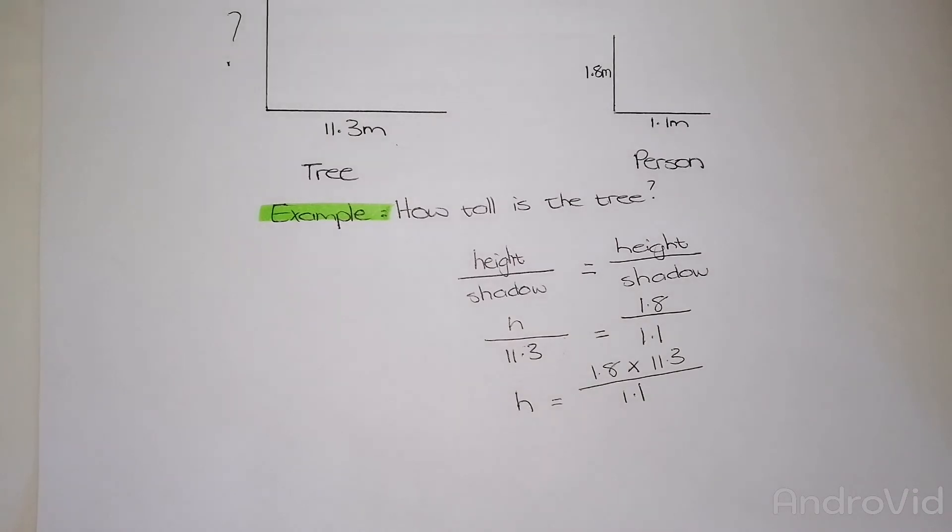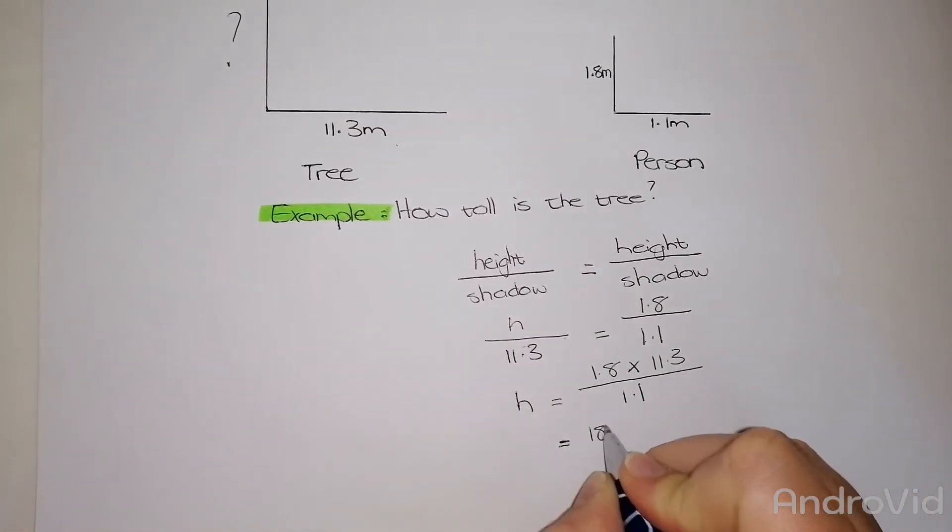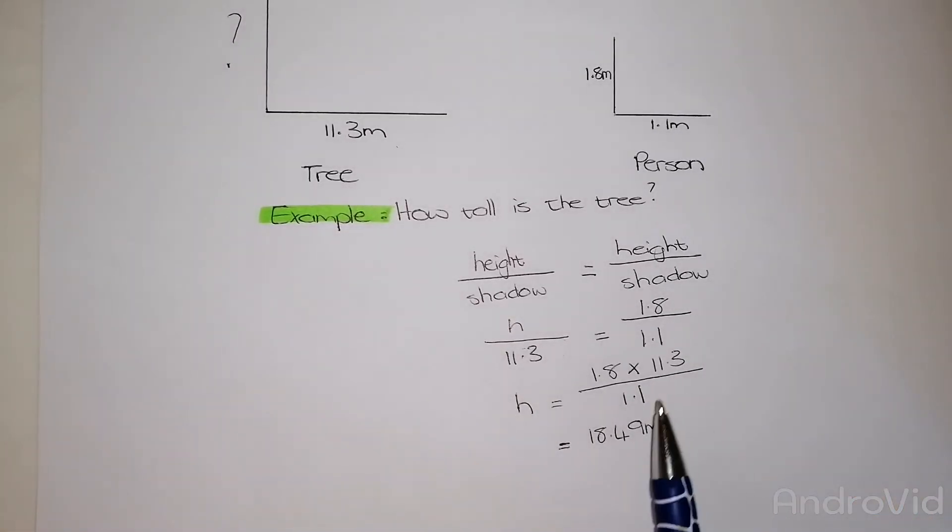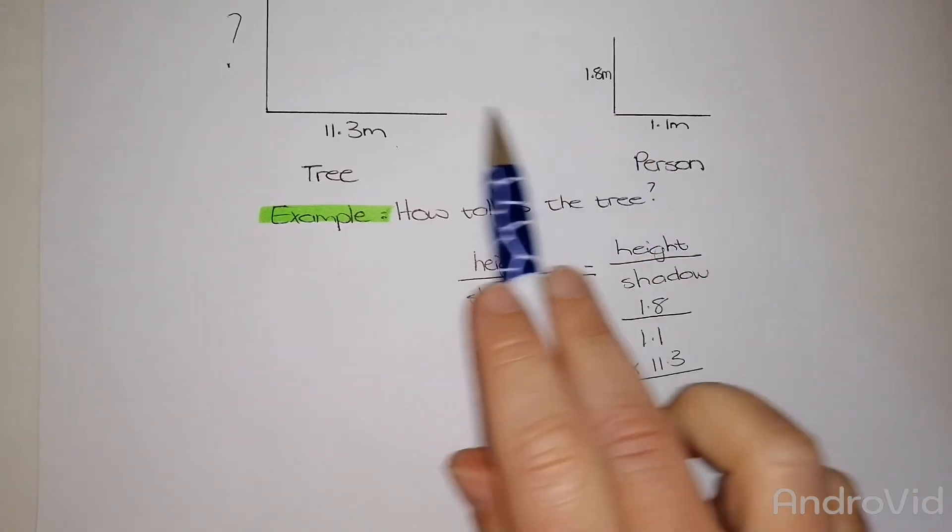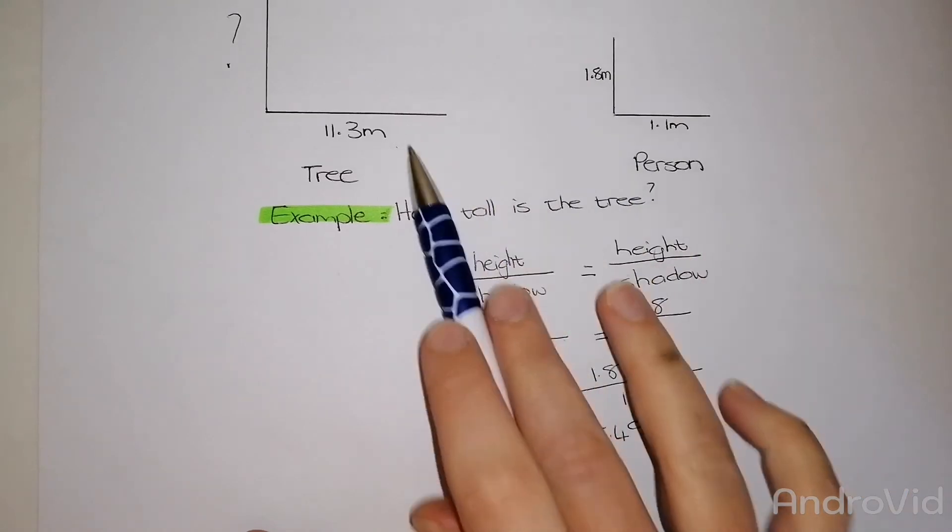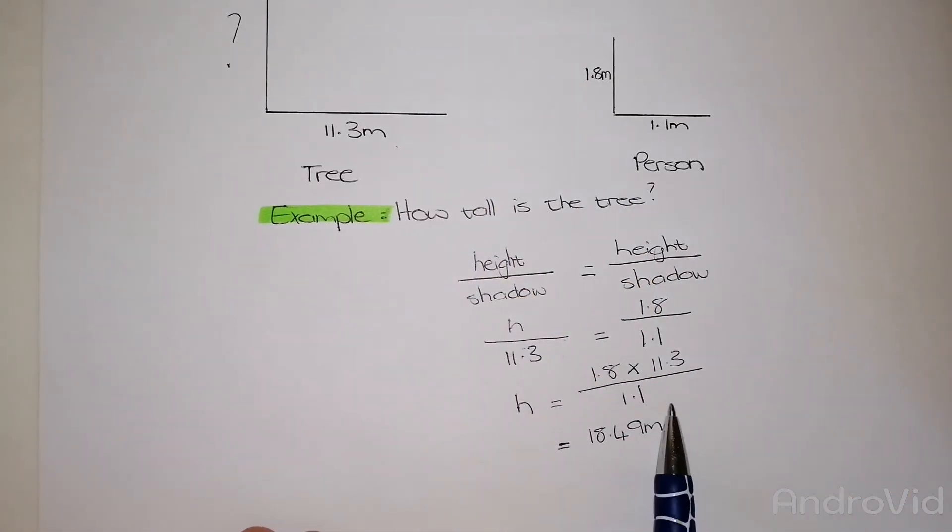When I type that into my calculator, the height I will get is 18.49 meters. Very important that you write the same unit that you have done all your measurements in. To be able to do this, all of your units have to be the same measurement or the same unit so that you can find the correct answer.